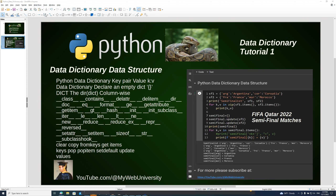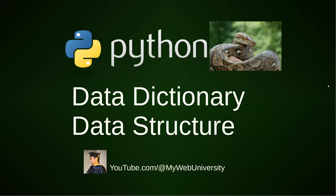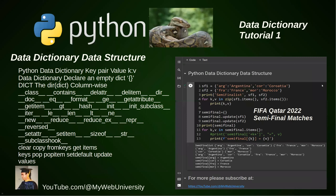I'm going to go through a slideshow. The Python dictionary data structure is defined as a combination of methods and double-underscore magic methods, or special methods. This video is about the data structure for the semifinal of FIFA Qatar 2022, which features four teams: Argentina versus Croatia, and France against Morocco. Without further ado, let's get started.